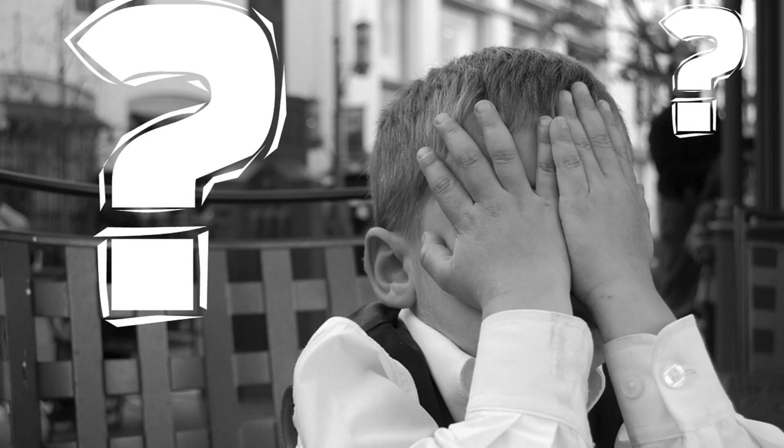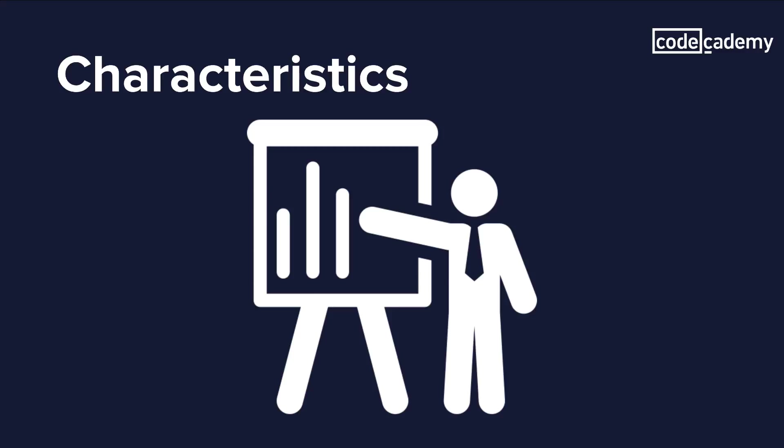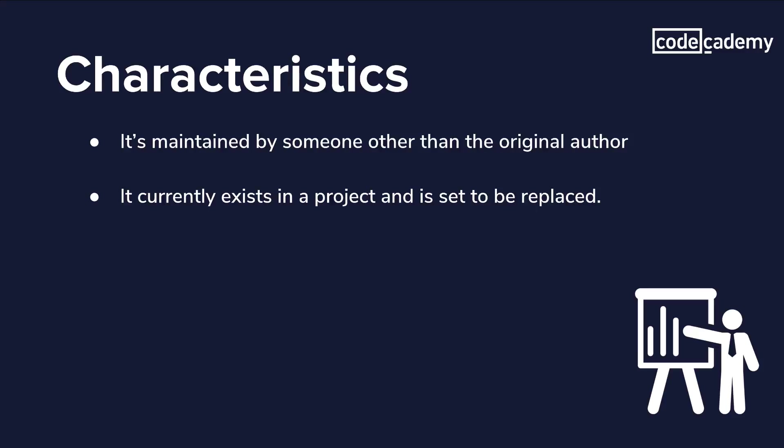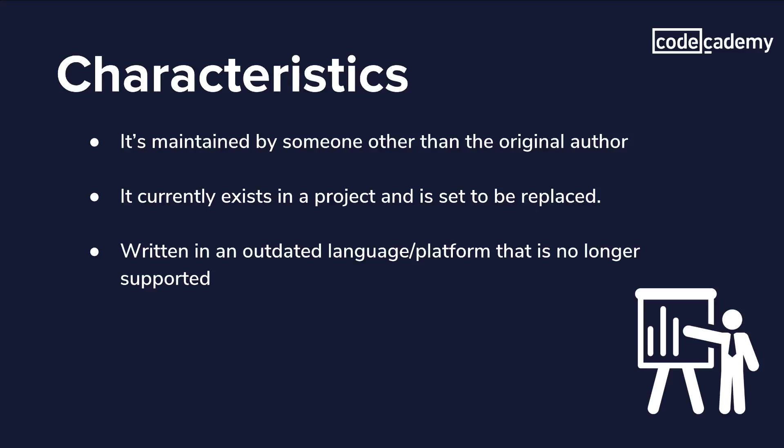So with all these definitions, let's look at the key characteristics of legacy code as it exists in the industry today. First is our original definition: it's any code maintained by someone other than the original author — maybe they left the company, stopped working on the project, or passed it to another developer. It's also code that currently exists in a project but is set to be replaced, or code written in an outdated language or platform no longer supported. It could also be code that doesn't have a suite of tests.